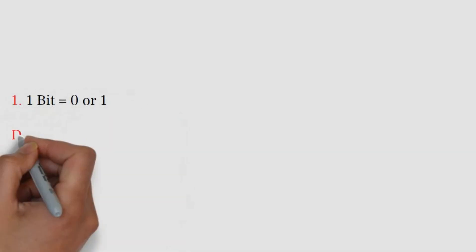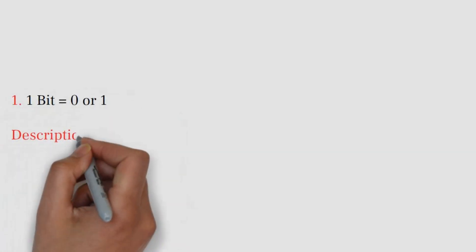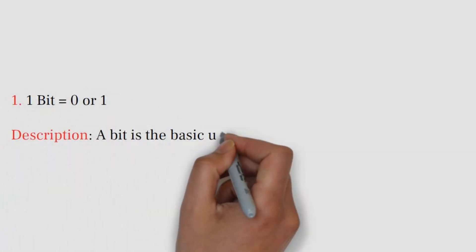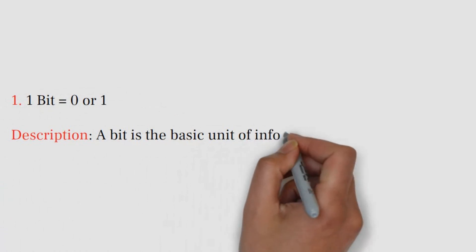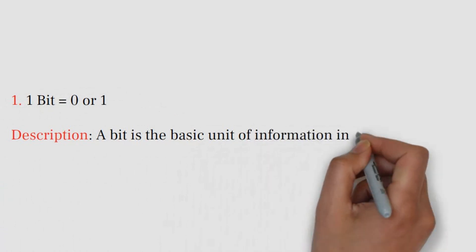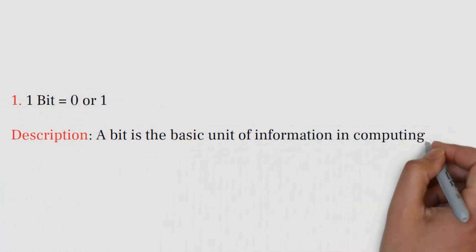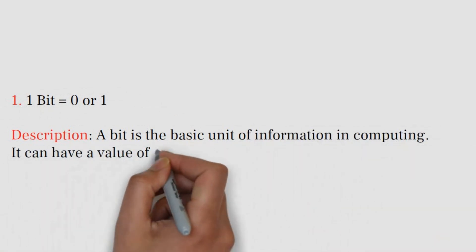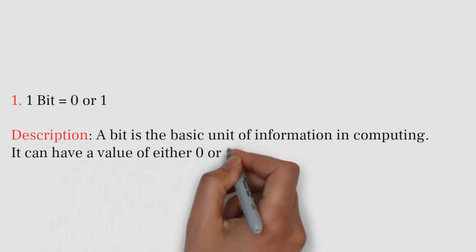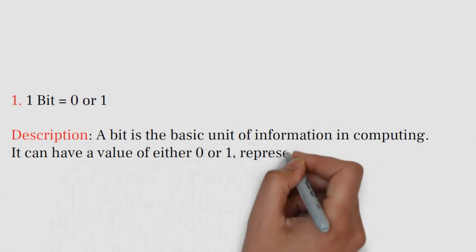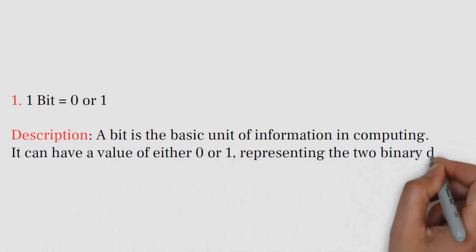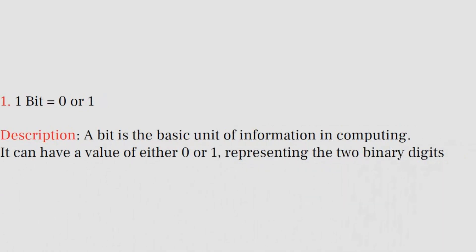Number 1: 1 bit equals 0 or 1. A bit is the basic unit of information in computing. It can have a value of either 0 or 1, representing the two binary digits.